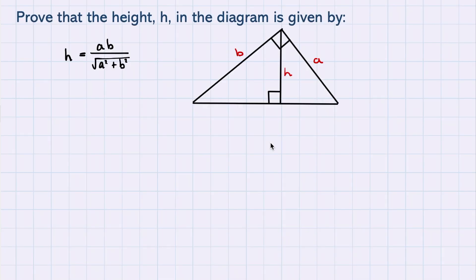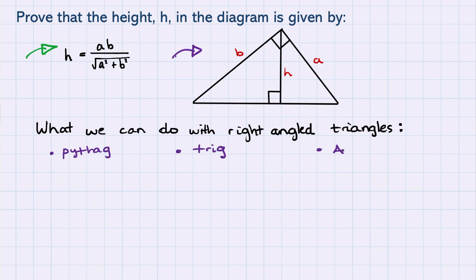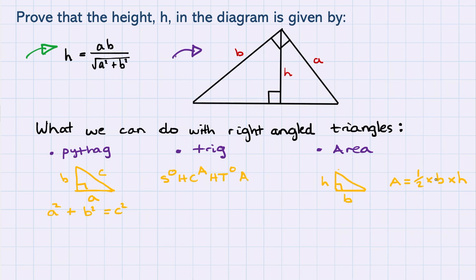Moving on, let's look at another example — this one will be a little bit trickier than the previous two. Prove that the height h in the diagram is given by h equals ab over the square root of a squared plus b squared. We're given a diagram and trying to prove what h is. We've got a couple of right angles — it's a right-angled triangle. Things we know how to do with right-angled triangles: use Pythagoras, use trigonometry, work out the area. Looking at what we're trying to prove, the denominator looks like it involves Pythagoras.